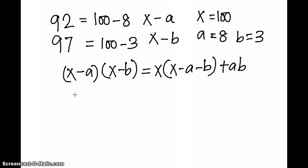Putting the values in either side, I get (100-8) which is 92 into 97. How we simplify it is 100(100-8-3) + 8×3, which is 24.